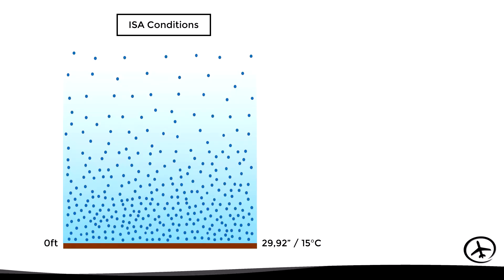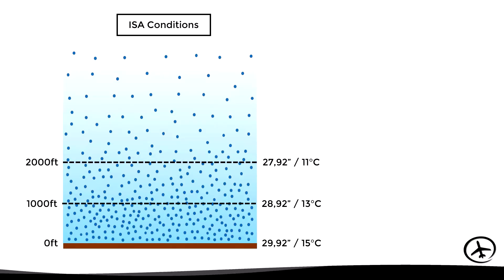As seen in the ISA atmosphere video, pressure decreases at a rate of 1 inch per 1,000 feet, while temperature decreases at 2 degrees Celsius per 1,000 feet. Therefore at 1,000 feet we have 28.92 inches and 13 degrees, at 2,000 feet we have 27.92 inches and 11 degrees, and so on.